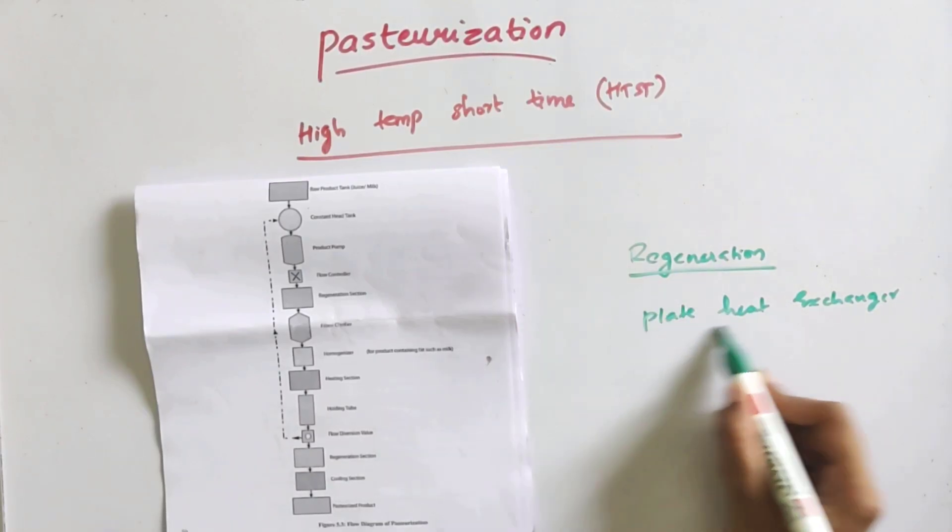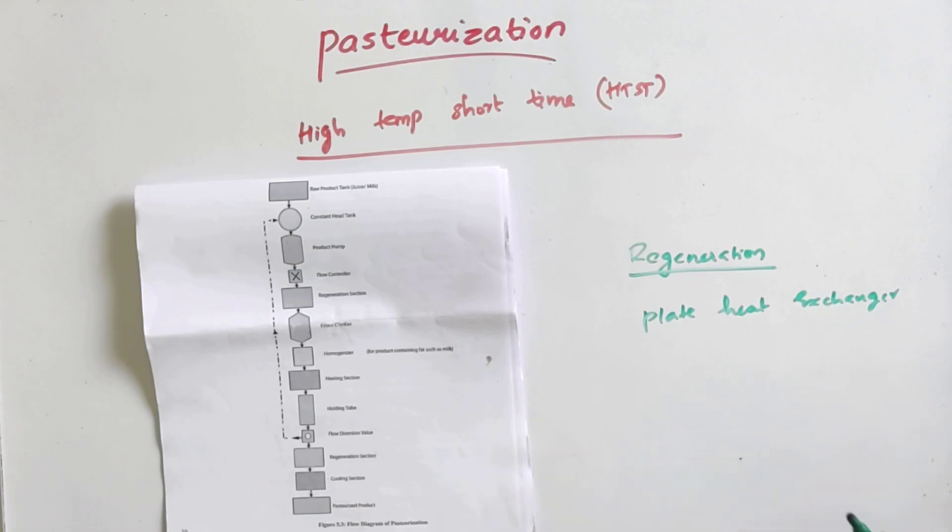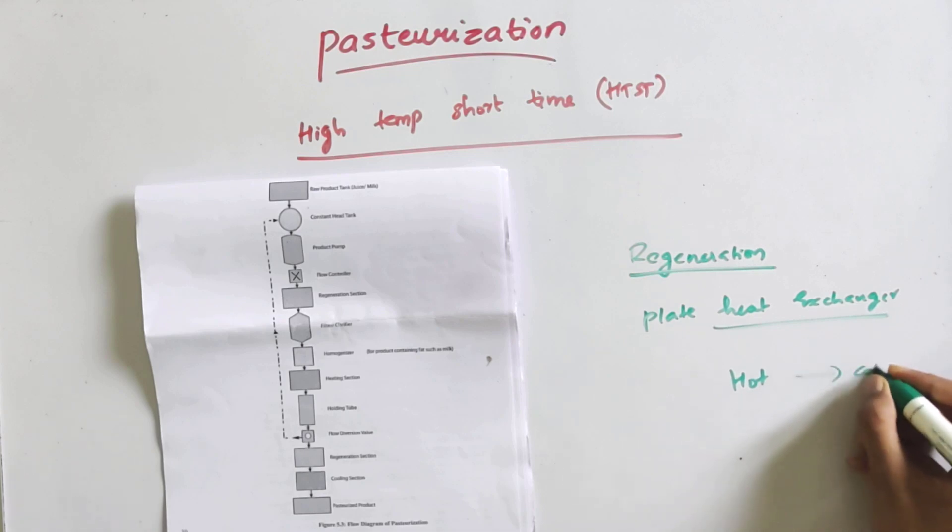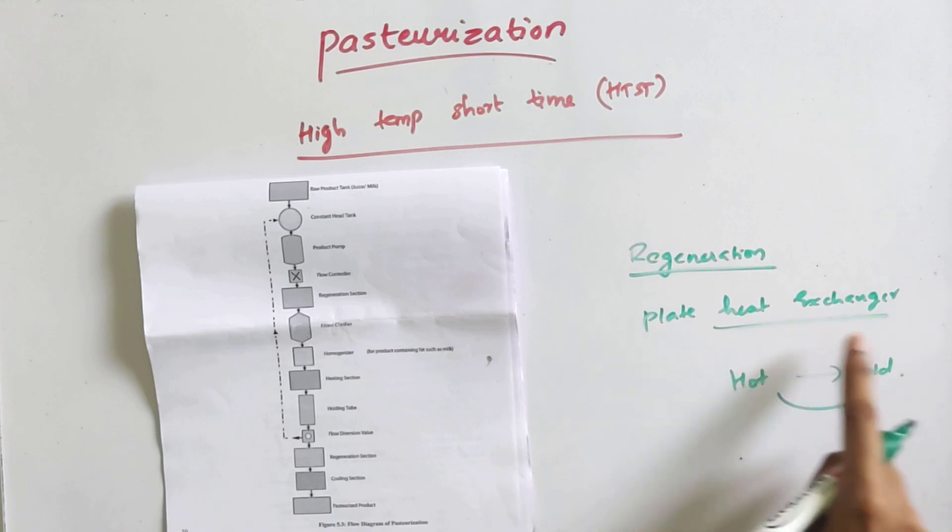We can use a heat exchanger. We have hot flow and cold flow. Then we have a heat exchanger where the hot fluid and cold fluid exchange heat through plates. We will heat the hot fluid and the cold fluid.